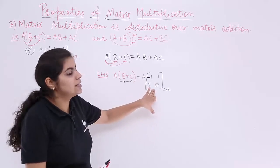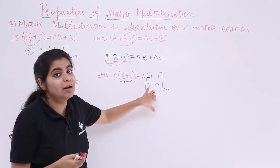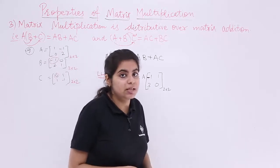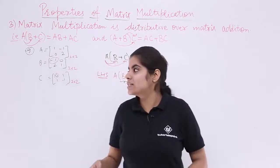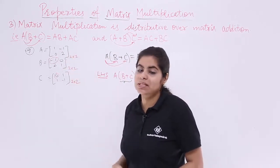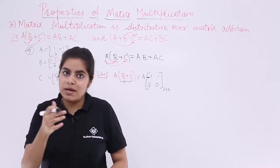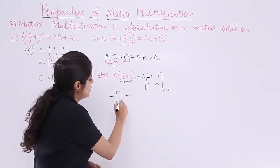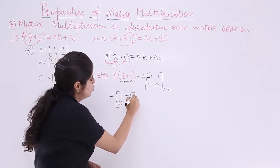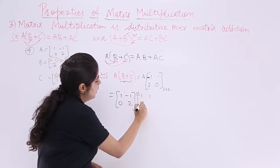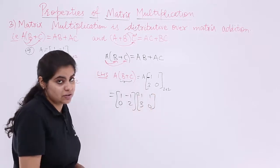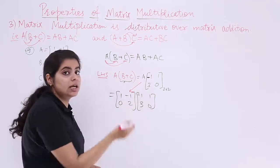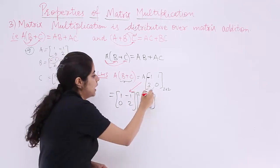Now we have to multiply A by this matrix (B+C). A is [1, -1; 0, 2] and (B+C) is [-1, 1; 3, 0]. We multiply these two matrices together using first row times first column, first row times second column, second row times first column, and second row times second column.